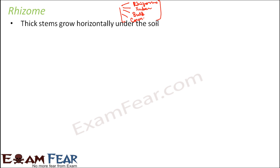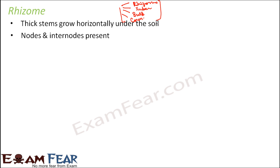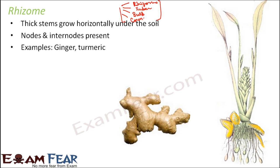Rhizomes are thick stems which grow horizontally under the soil. Nodes and internodes are present. Examples are ginger and turmeric. If you look at a turmeric plant, you can see adventitious roots — specifically fasciculated adventitious roots with swollen nodules.